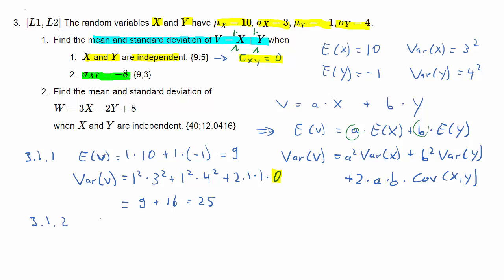So the variance of V is 25. What about the second part? The expected value will be exactly the same. Nothing changes. But the variance calculation will change. The beginning is the same, so it's going to be 9 plus 16. But now, the covariance bit isn't going to disappear.